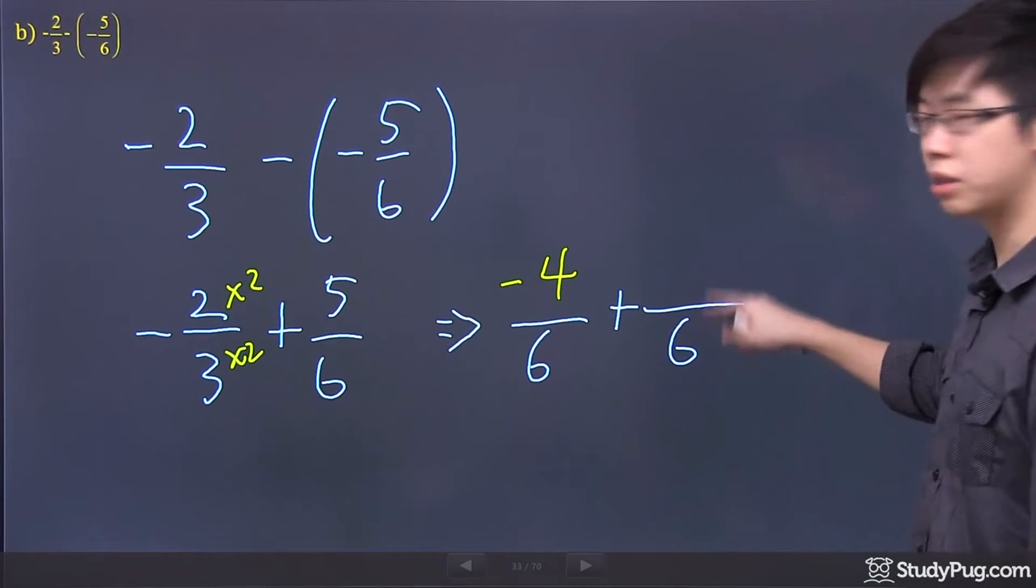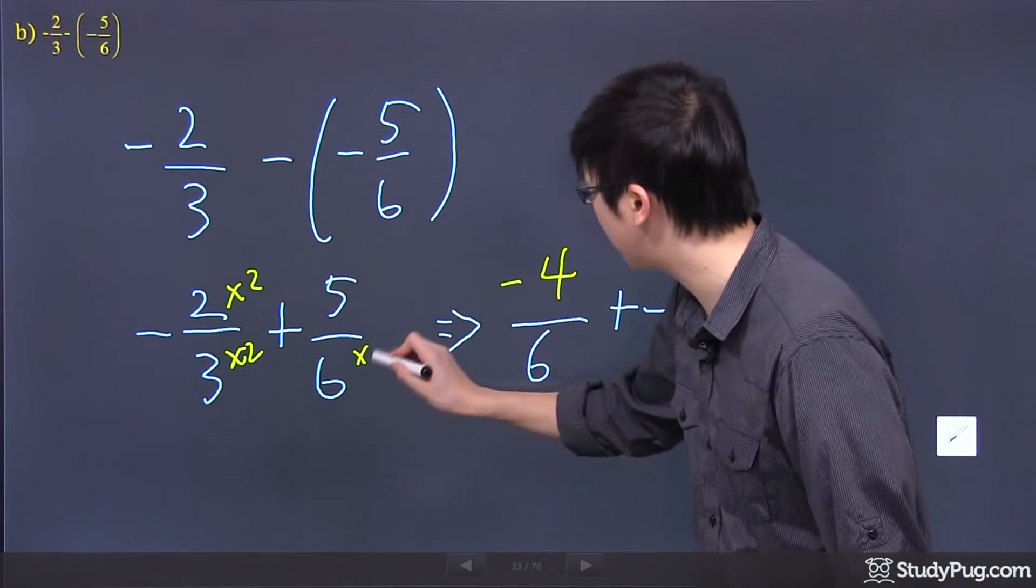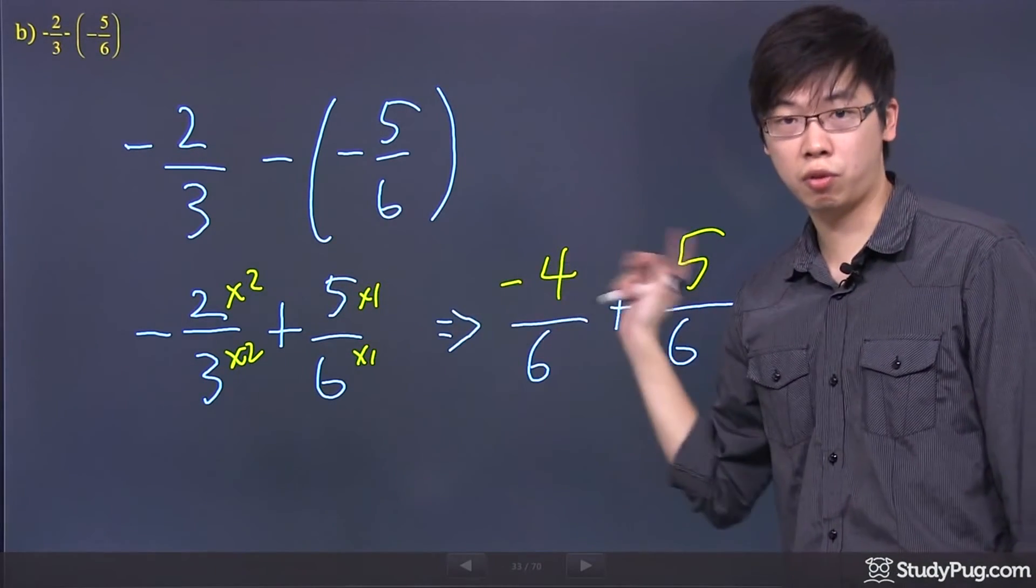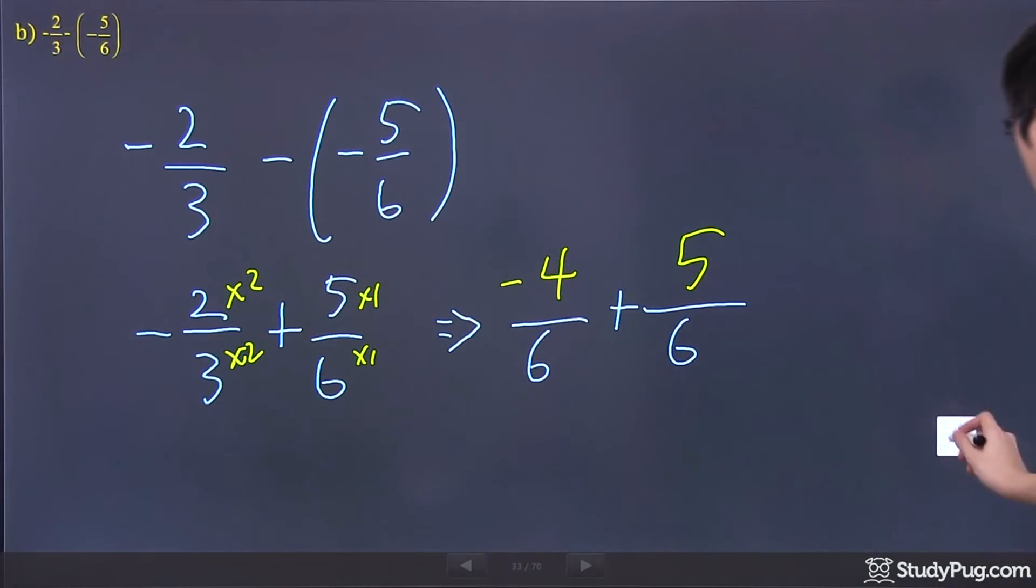The 5 over 6 kind of stays the same, because technically you times this by 1, you times that by 1. So what happened is you get yourself still the 5 in front of the before. So that part stays the same, okay?